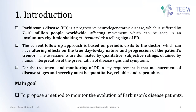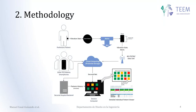For the treatment and monitoring of this disease, a key requirement is that the measurement of the disease stages and severity must be quantitative, reliable, and repeatable. Based on this, our main goal is to propose a method to monitor the evolution of Parkinson's disease patients. Here we have the flowchart that I am going to start explaining.